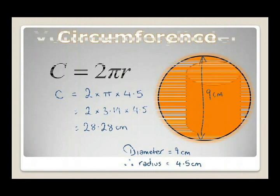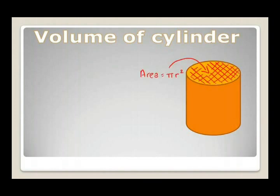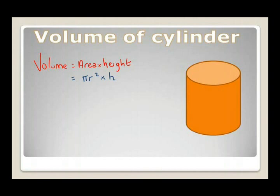The next thing we will look at is the volume of a cylinder. When considering the volume of a cylinder, the area of the circular part is πr², and the other dimension is the height. The volume is simply the area of the circle times the height, so the volume = πr² × h. Let's use this to work out the volume of a few cylinders.